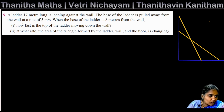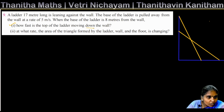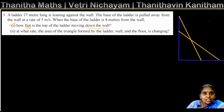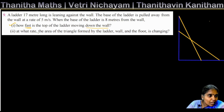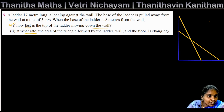The first question is: how fast is the top of the ladder moving down the wall — that is, the height? The second question is: at what rate is the area changing?